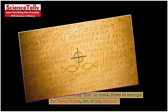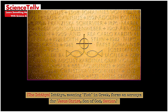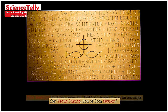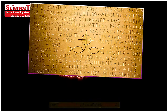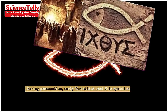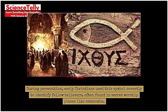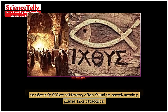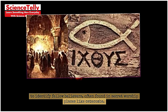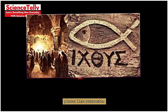The Ichthys, meaning 'fish' in Greek, forms an acronym for 'Jesus Christ, Son of God, Savior.' During persecution, early Christians used this symbol covertly to identify fellow believers, often found in secret worship places like catacombs.